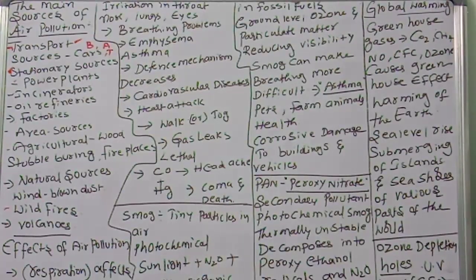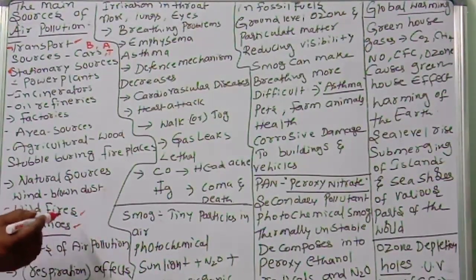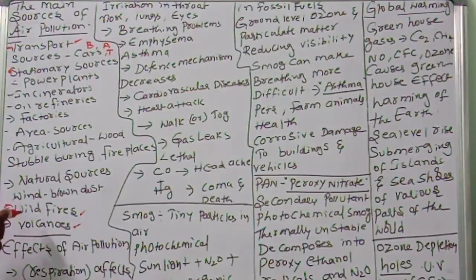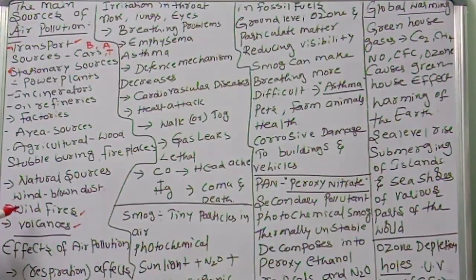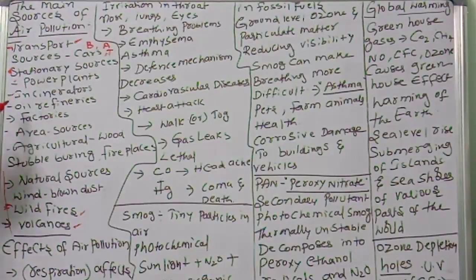Volcanoes release enormous amounts of smoke. Even wildfires and forest fires cause massive pollution — many lakhs of acres of forest can be burned. So much pollution is caused by these natural sources.